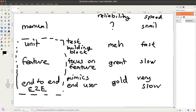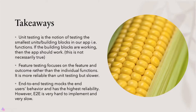End-to-end testing is more relevant in front-end development and won't be our focus when building an API server. In upcoming videos we'll dive deeper into writing unit tests and feature tests in Laravel. Key takeaway: unit testing tests the smallest building blocks (functions); feature testing focuses on the feature outcome and is more reliable but slower; end-to-end testing mocks end user behavior with the highest reliability but is very hard to implement and slow.